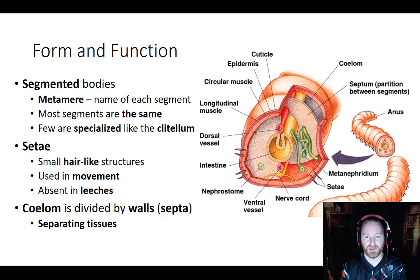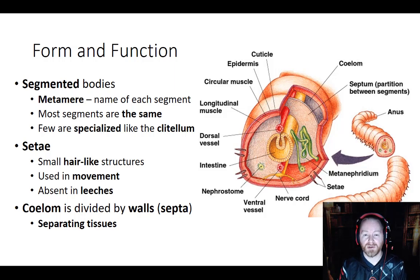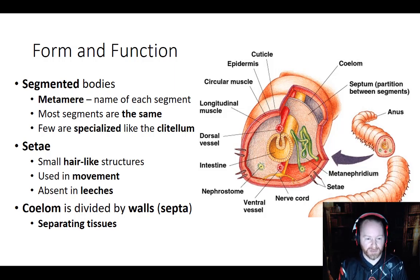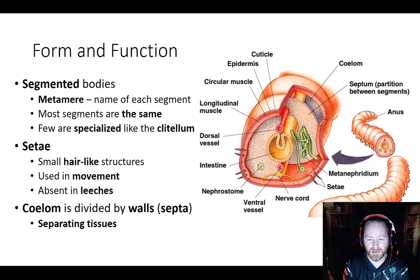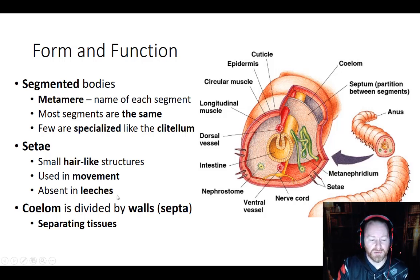Looking at their form and function: each segment is called a metamere. Most segments are the same — there are some specialized ones at the front for sensory organs and the mouth, some in the middle like the clitellum for reproduction, and one at the end where the anus is, but the vast majority are exactly the same. Many annelids have little hairs called setae that stick out and are used for movement, feeding, and a couple of other functions. You can barely see them on an earthworm, but on species like feather dusters they're very pronounced. The only group without setae are the leeches.